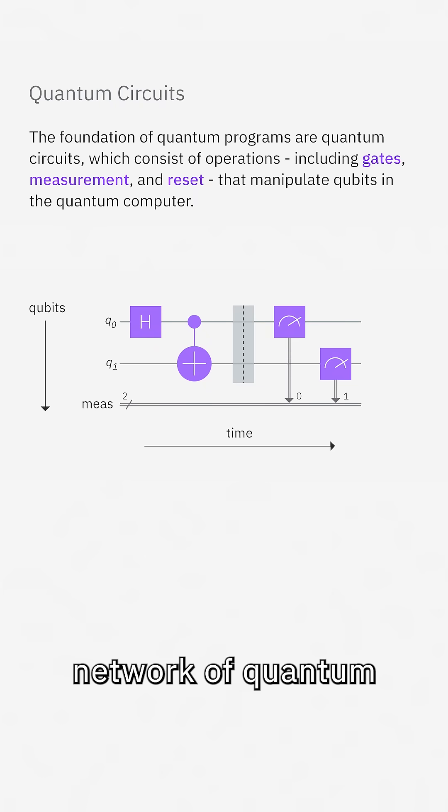Now a quantum circuit is a network of quantum gates and measurements linked by wires that represent the qubits. Quantum circuits can be read like sheet music from left to right, starting at time zero which is all the way on the left.